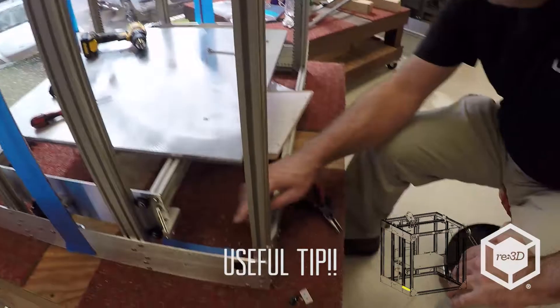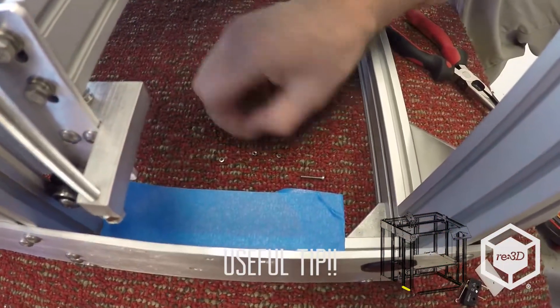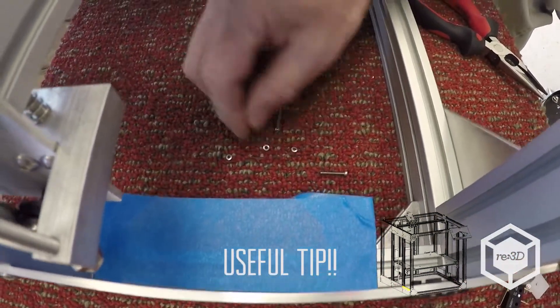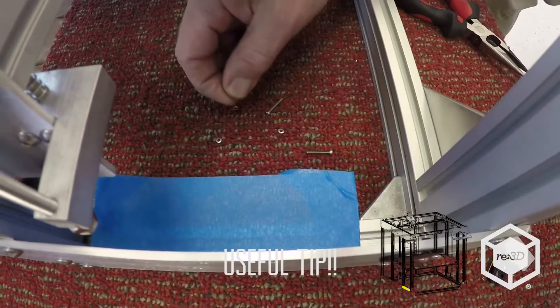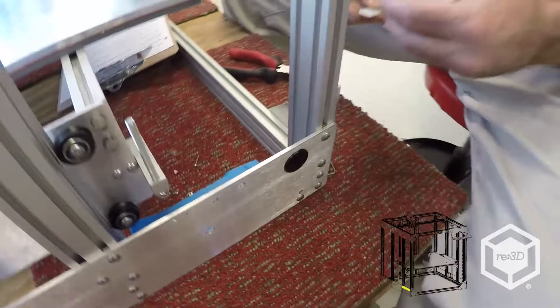One thing I like to do is put a piece of tape when I'm doing the lower one, because I've dropped so many of these lock nuts and or the nuts and the lock washers down into the T slot and it's hard to get them out. So I always put a piece of tape there because I'm going to drop one, guaranteed.